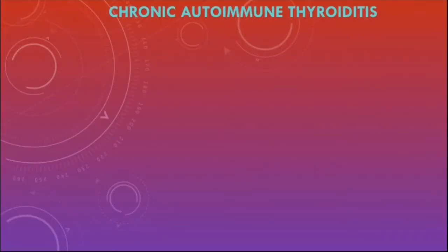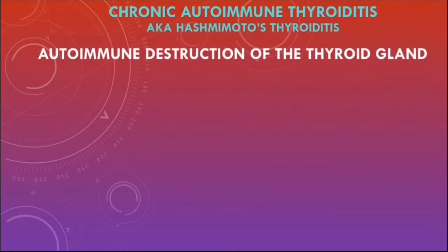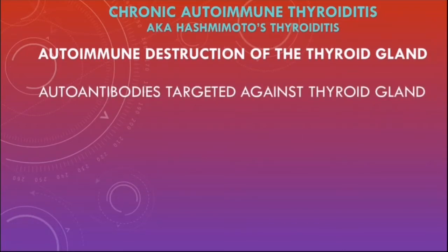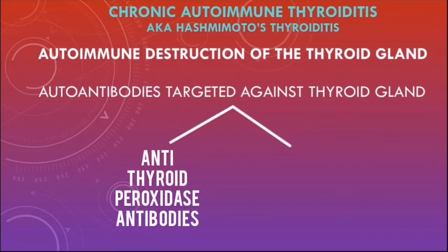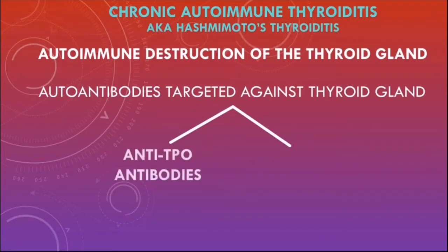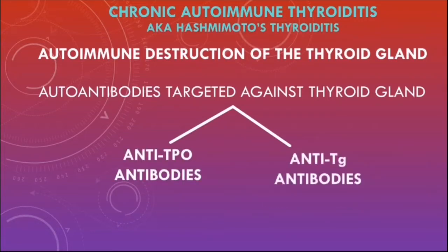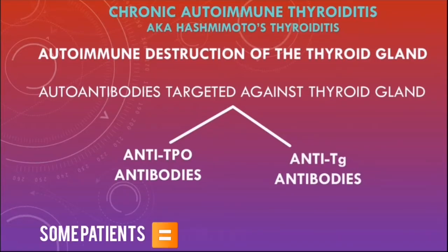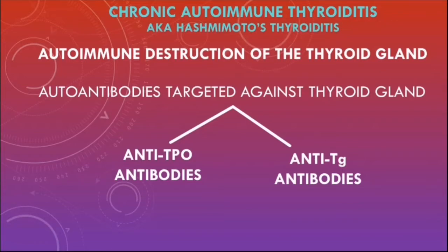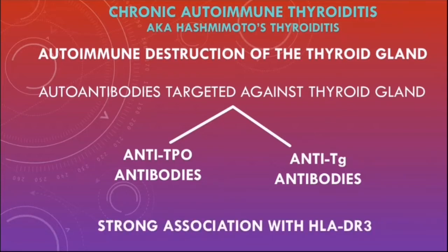Chronic autoimmune thyroiditis, also known as Hashimoto's thyroiditis, is characterized by autoimmune destruction of the thyroid gland. This is caused by autoantibodies targeted against the thyroid gland — the main ones being antithyroid peroxidase antibodies (anti-TPO) and antithyroglobulin antibodies (anti-TG). Some patients are also positive for TSH receptor antibodies. Patients have a strong genetic association with the HLA-DR3 genotype.